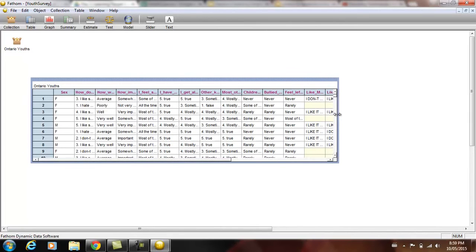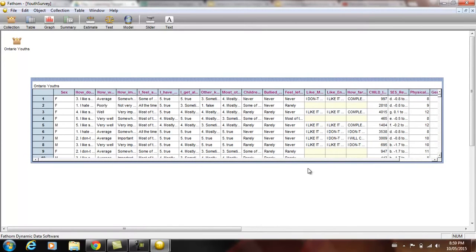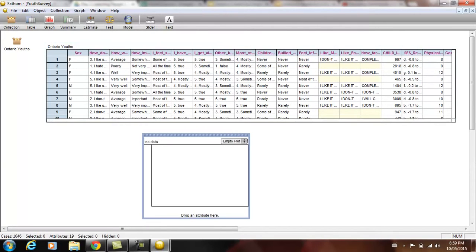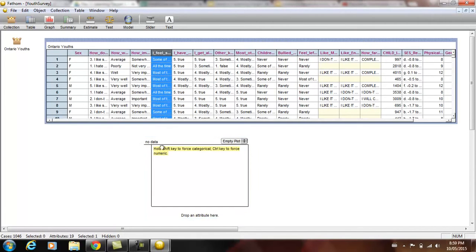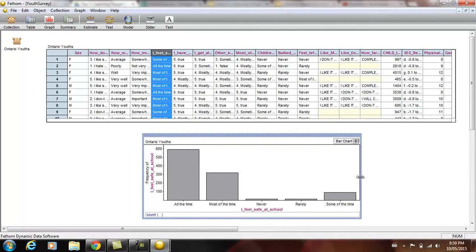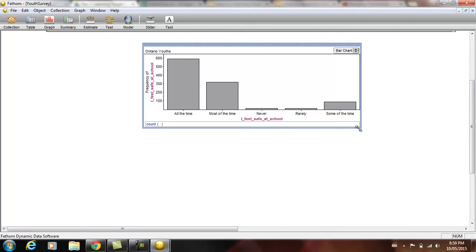And so again, we can actually see what types of data are nominal versus ordinal depending on the graph. So we can see, here's a question: We feel safe at school. And so something that's really important to schools to make sure that their students feel safe.